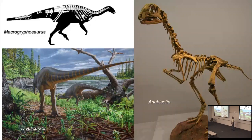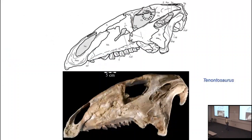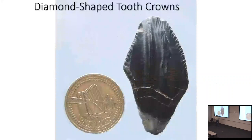The early branches of Iguanodontia are not dramatically different anatomically from the hypsilophodont grade — some are quite small and still obligate bipeds. There appears to be a major Gondwanan component among these, though they're not all from the southern hemisphere. A somewhat better-known North American form from the mid-Early Cretaceous is Tenontosaurus — and we've actually found teeth of this dinosaur from Prince George's County right around here.